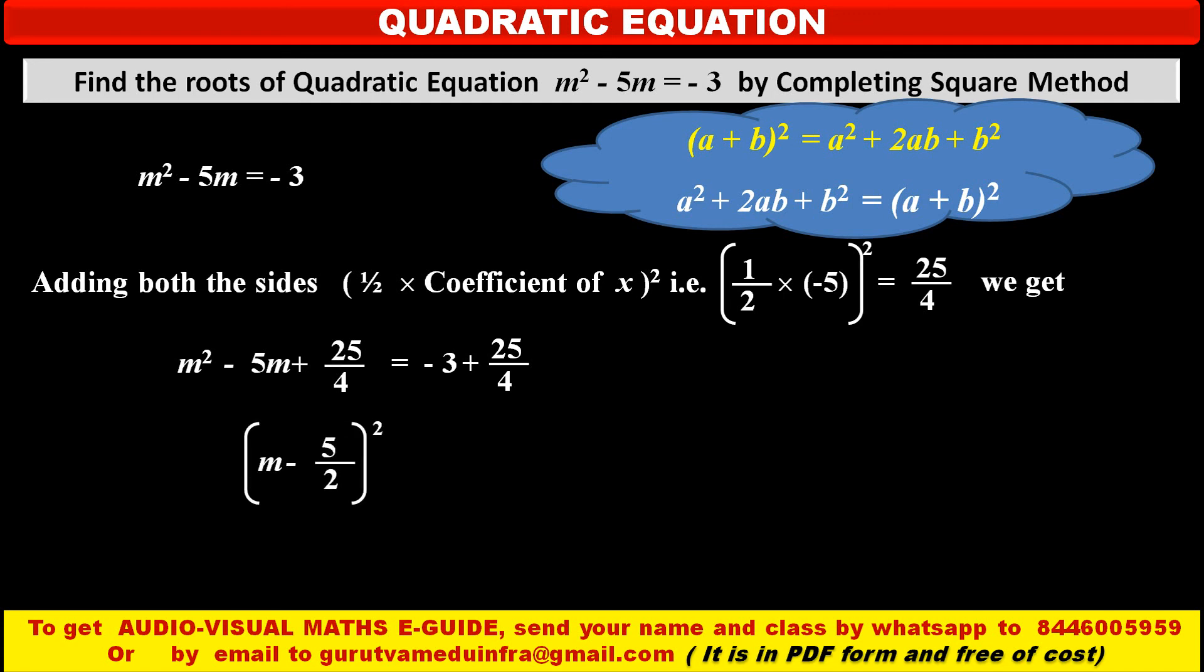According to our above formula, left hand side is an expansion of m minus 5 upon 2 whole square, which is equal to, following right hand side, we get 13 upon 4.